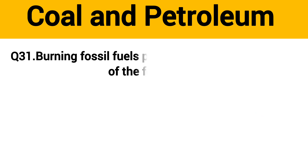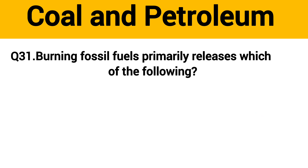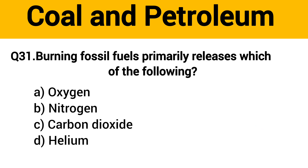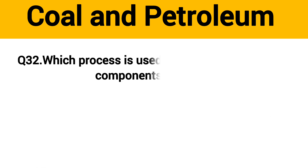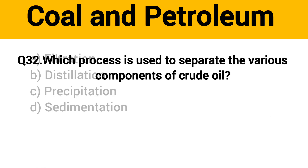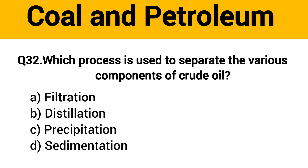Question No. 32. Burning fossil fuels primarily releases which of the following? The right answer, Option C: Carbon dioxide. Which process is used to separate the various components of crude oil? The right answer, Option B: Distillation.